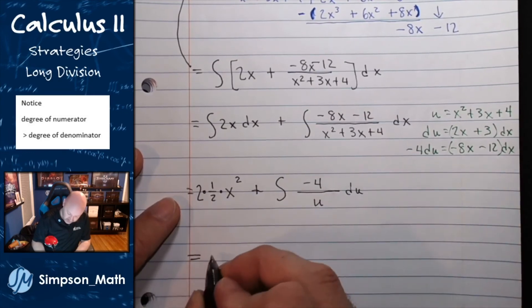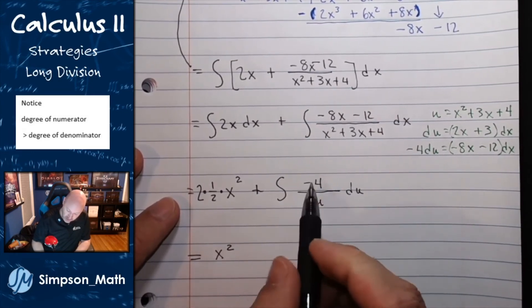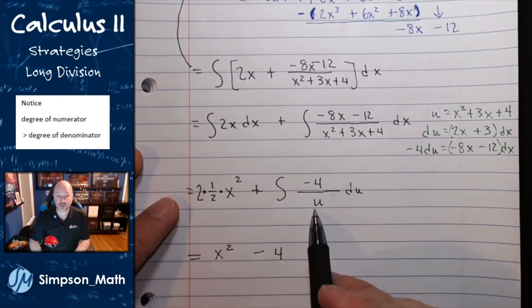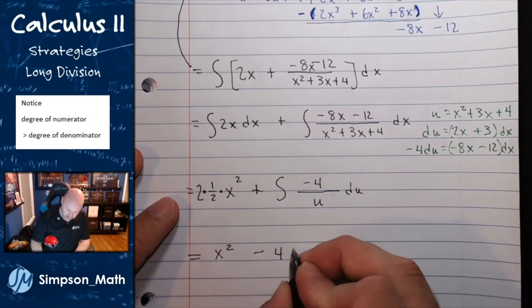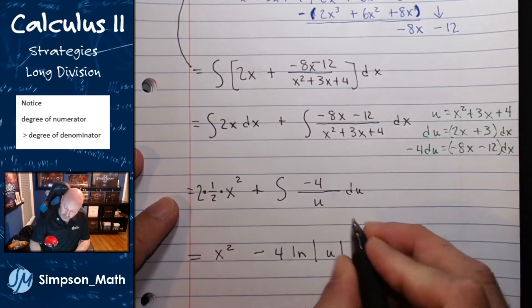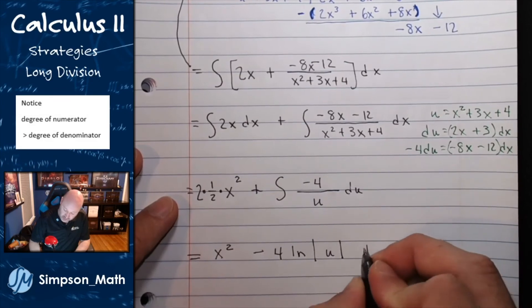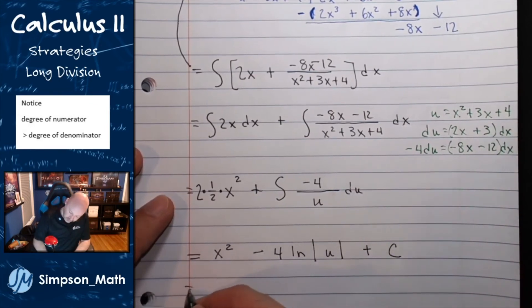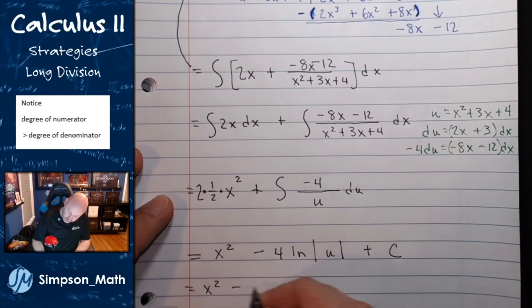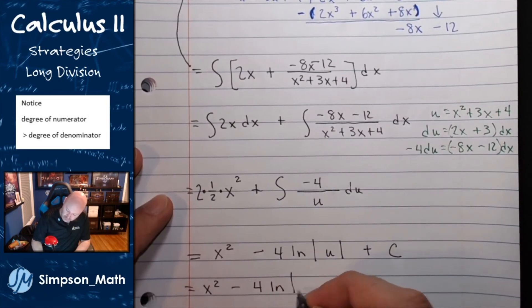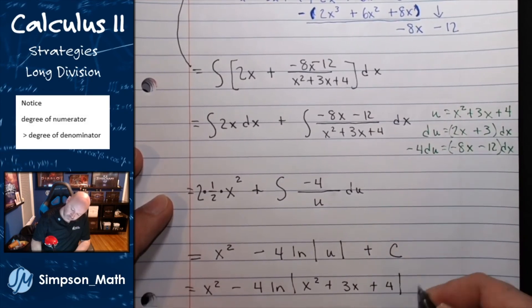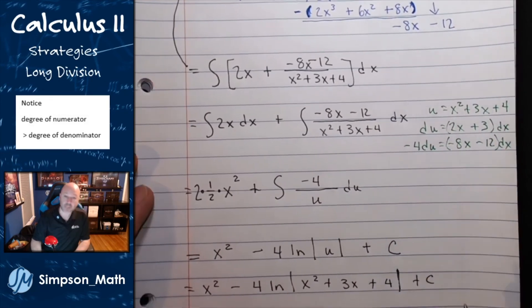Half of 2 is just 1, so I have x squared. Go ahead and pull that minus 4 out. The integral of 1 over u is the natural log of u. Taking care of all the integrations. I'll go ahead and put a constant out there. And then I'll just rewrite u in terms of x.